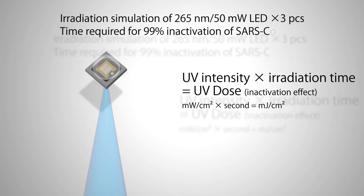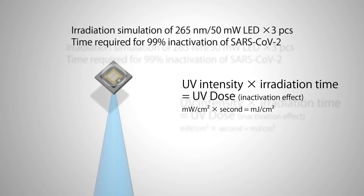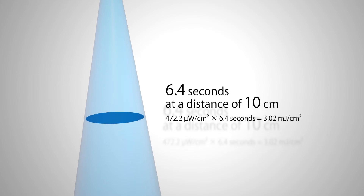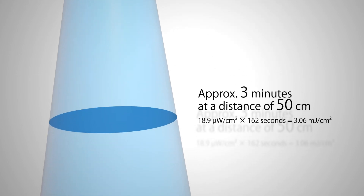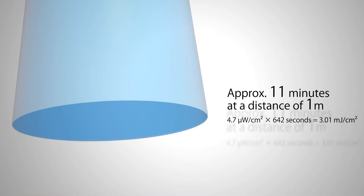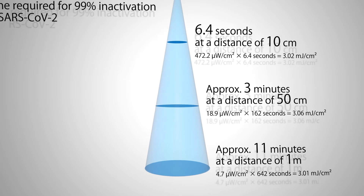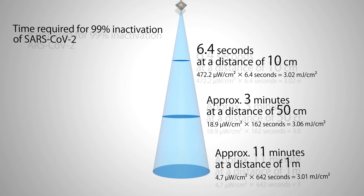The disinfection effect of UV can be calculated by multiplying the UV irradiation by the irradiation time. When 265 nanometer UV-C is used, it takes 6.4 seconds at a distance of 10 centimeters, around 3 minutes at 50 centimeters, and around 11 minutes at 1 meter to inactivate 99% of the new coronavirus.